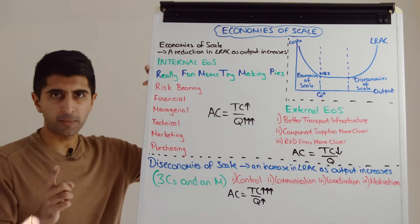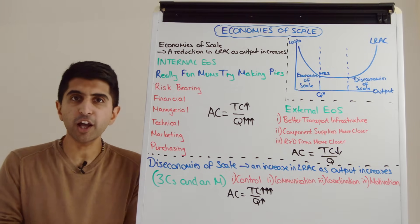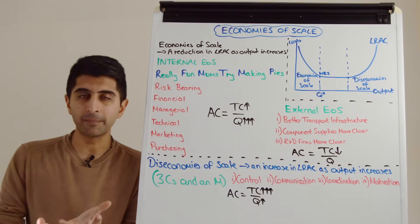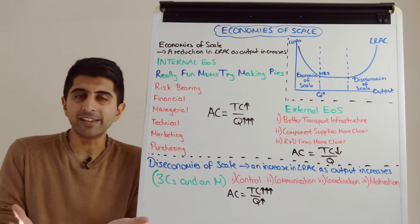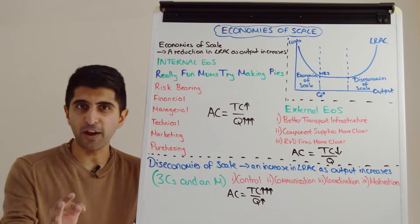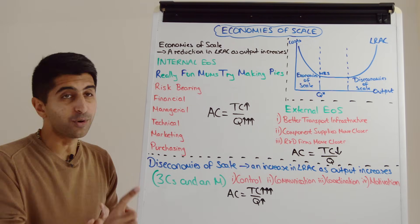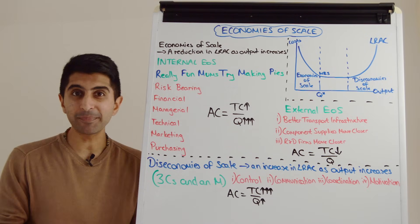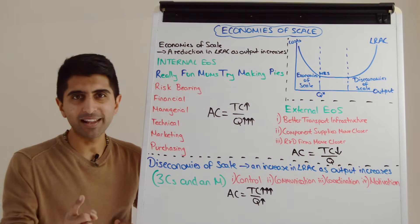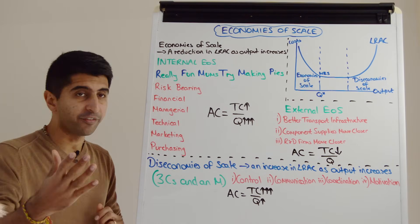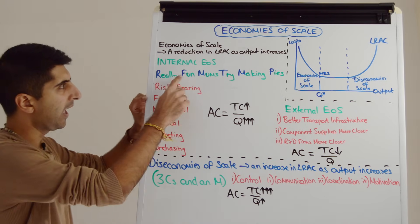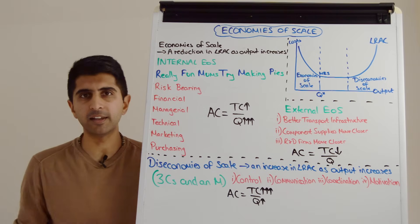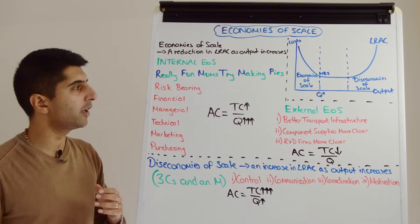Let's go to internal economies of scale first. Internal economies of scale all occur within a business — they are within a business's control, and a business can exploit them as they get larger. Just remember this very useful memory device: 'Really Fun Mums Try Making Pies.' Each starting letter gives us a specific type of internal economy of scale. R for risk-bearing, F for financial, N for managerial, T for technical, M for marketing, and P for purchasing.